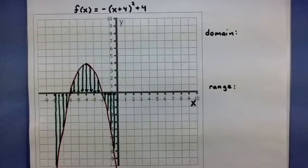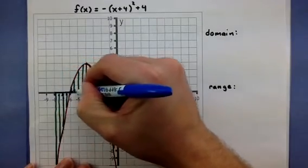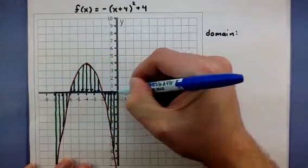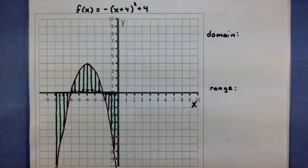As I start to trace all of these back, you can see that it starts to shade in the x axis. Let me use my blue marker to shade in exactly where I've traced it back to. So far it looks like our domain goes from between -8 and up to 0.